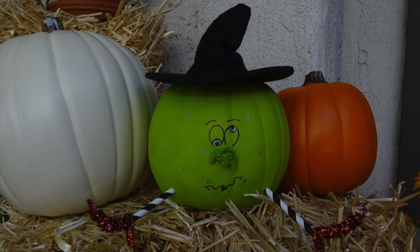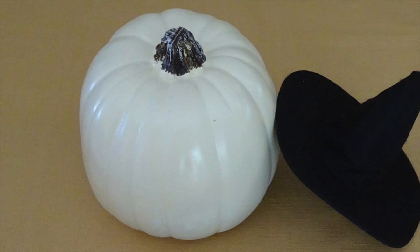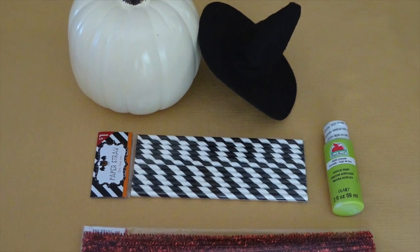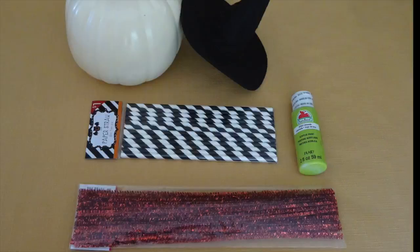Welcome back to Mrs. Meyers for DIYers. Let's get started! For this project you'll need a craft pumpkin, paper straws, pipe cleaners, some green paint, and a felt hat.